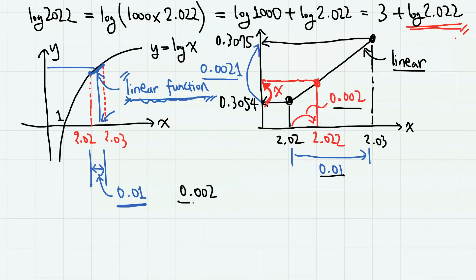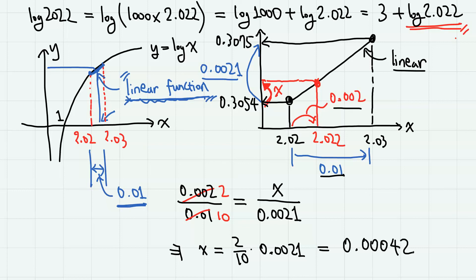The ratio 0.002 over 0.01 equals x over 0.0021, which is simply 2 over 10. From here, x equals 2 over 10 times 0.0021, which is 0.00042.